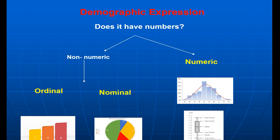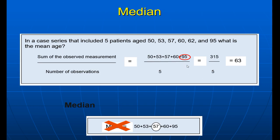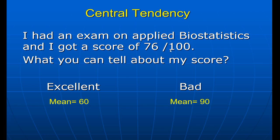We spoke in the last lectures about the types of variables — ordinal and nominal, which can be expressed with a percentage, and numeric or scale, which is tricky in expression. We also spoke about central tendency: the concept of mean, which is very important in biostat, and the concept of median — when data has extreme values, the median should be used.